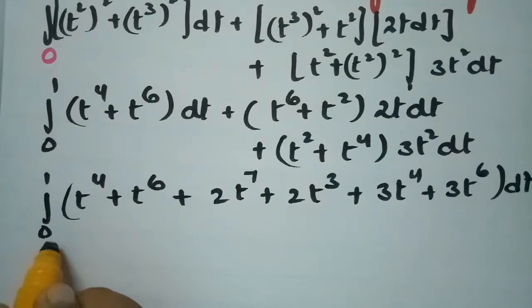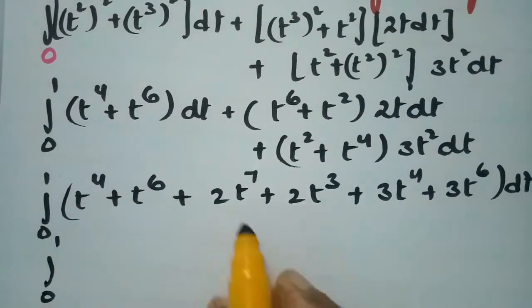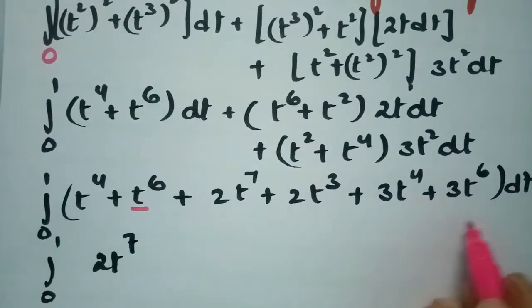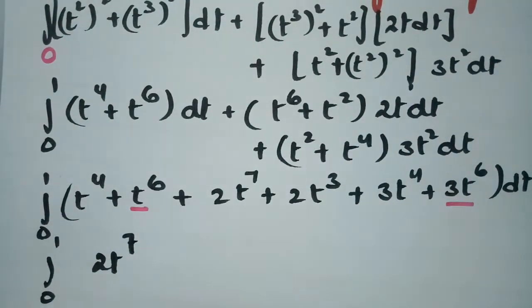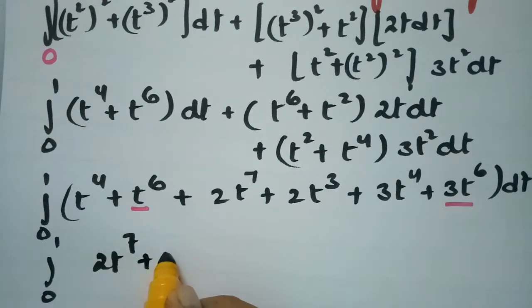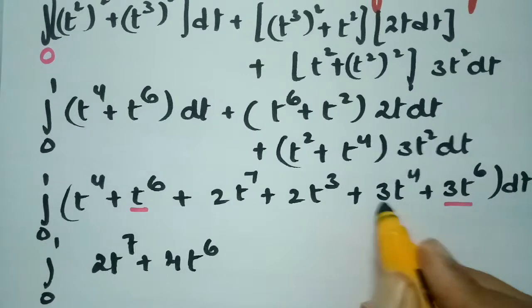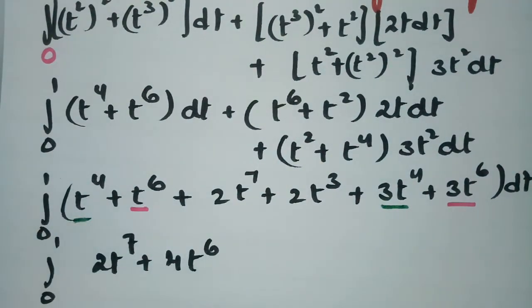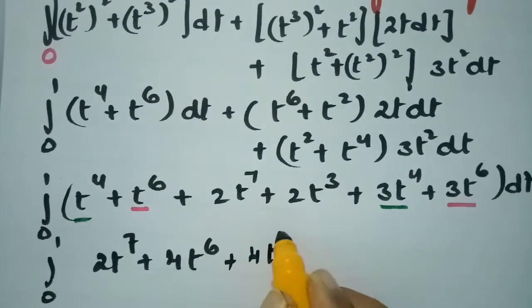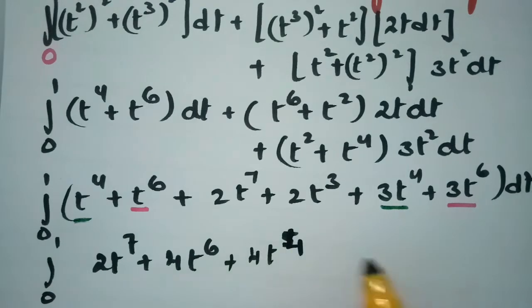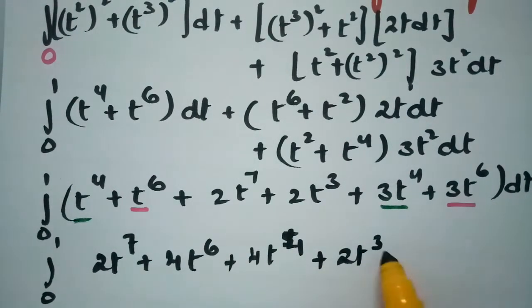Expanding and combining: the integral from 0 to 1 becomes t⁴ + t⁶ + 2t⁷ + 2t³ + 3t⁶·dt, which simplifies to the integral of 2t⁷ + 4t⁶ + 4t⁴ + 2t³ dt from 0 to 1.